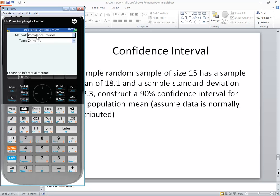We want to choose the method confidence interval. If you press enter on that, if you've got hypothesis test chosen, just simply highlight confidence interval and press enter.